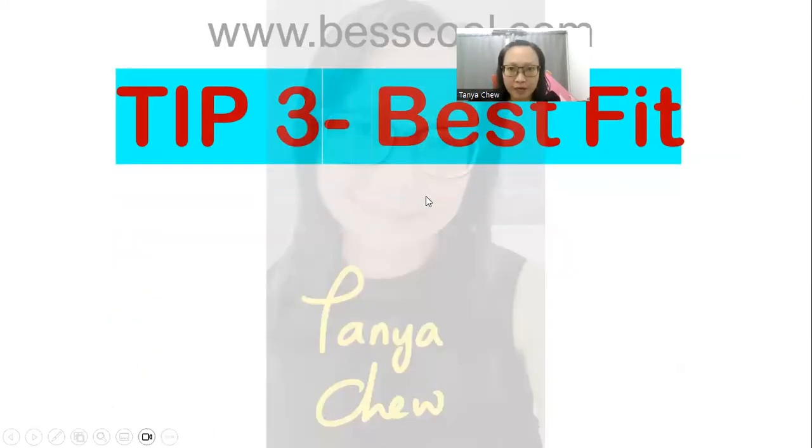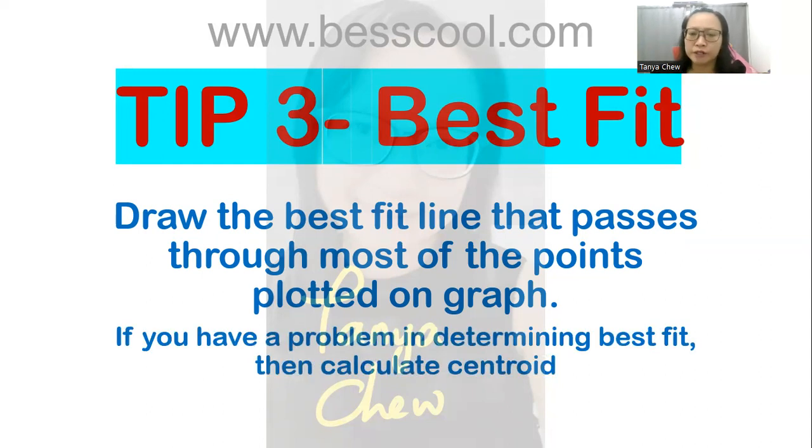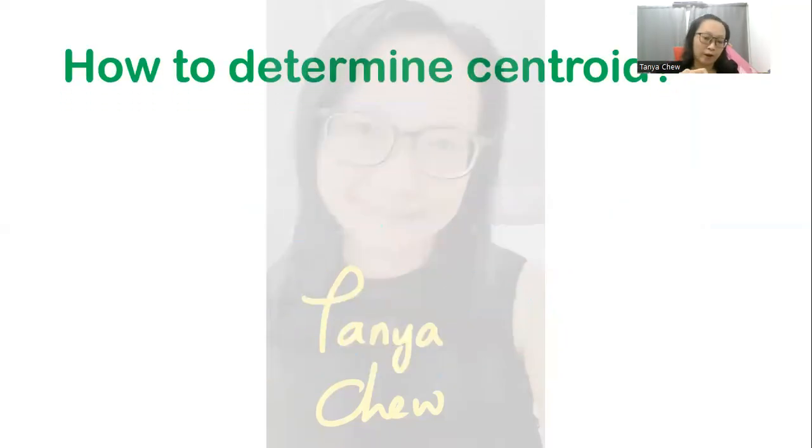Tip number 3: Your best fit. So what is best fit? Best fit is a straight line that passes through most of the points plotted on your graph. But sometimes, because we are human, when we conduct the experiment, there are some errors occurring. Not all the points are scattered on that best fit. So it is not easy to plot a best fit. If you have a problem determining your best fit, then I would suggest you to go for the calculation of centroid because this is 100% accurate.